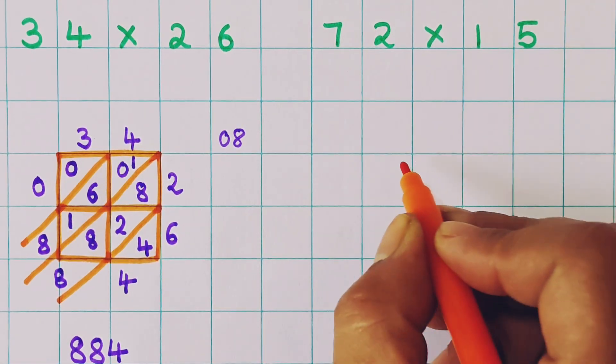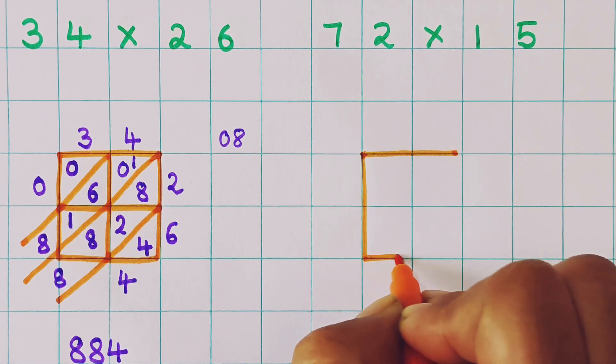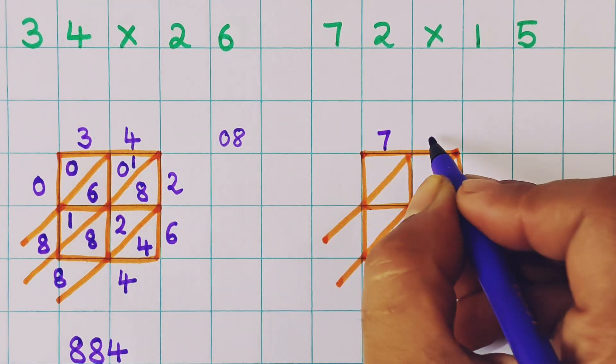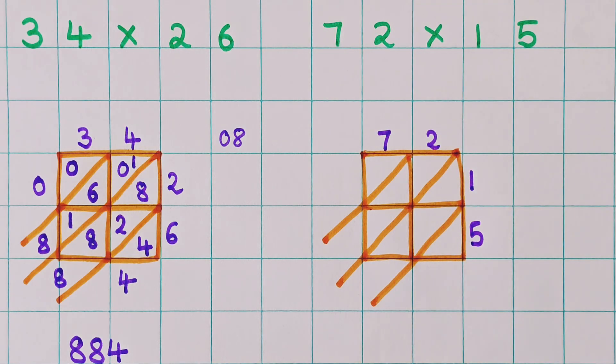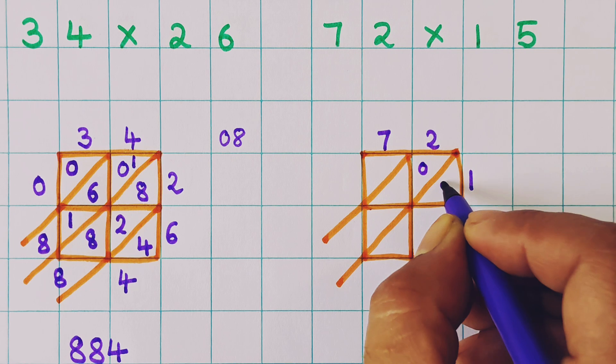72 into 15. Again two two-digit number multiplication. So first I am going to make the boxes. Now let's write the numbers. 72 into 15. Now two ones are 2. So I will write 0, 2.